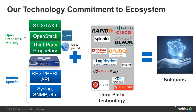Infoblox is heavily invested in integration interfaces because we want to make sure that we are interoperable and can easily communicate with third-party technologies. Infoblox can share threat intelligence with other security technologies using REST API, STIX/TAXII industry-standard protocols — where STIX is a language for modeling and representing cyber threat intelligence, and TAXII is a protocol for exchanging cyber threat intelligence — and proprietary data exchange technologies like Cisco PX Grid and McAfee DXL.